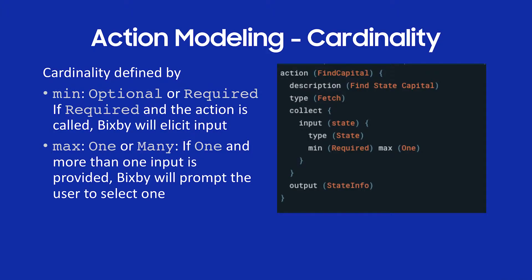Let's talk about action modeling and cardinality. In my example, I have the action FindCapital and I'm collecting a state. You can see min required and max one — that's the cardinality. Min required means I need at least one, and max one means exactly one. I can also have min optional (zero is valid) and max many (as many as I want). Setting min optional and max many means zero to as many as I want is possible.